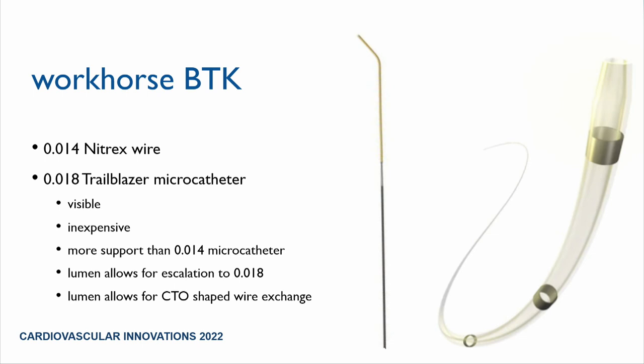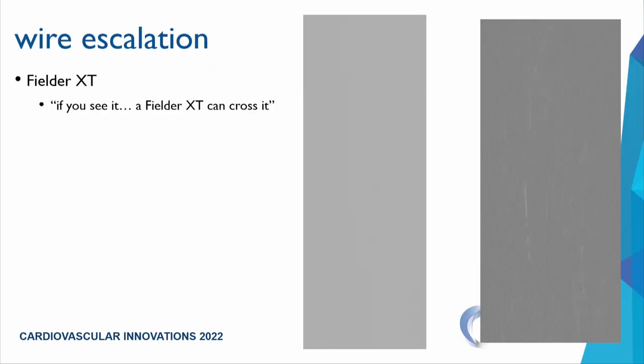I use a 0.014 Nitrix wire — a nitinol cord wire with a silicon coating and gold-tungsten coiled wrap, which is visible under fluoroscopy and relatively inexpensive. I use the 0.014 Nitrix through an 0.018 Trailblazer microcatheter. The 0.018 provides more pushability compared to 0.014 catheters, which collapse easily across CTOs. The 0.018 also allows addition of CTO-tipped wires.